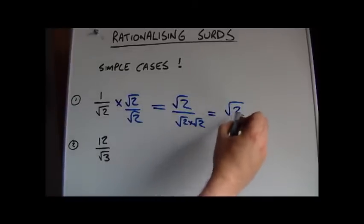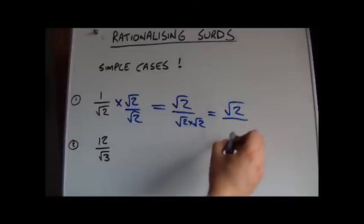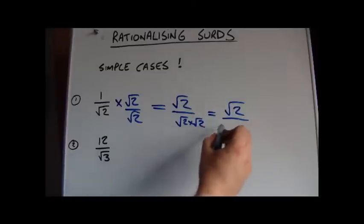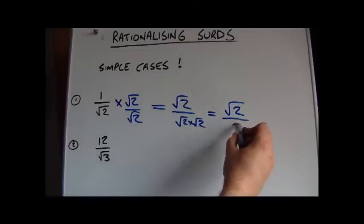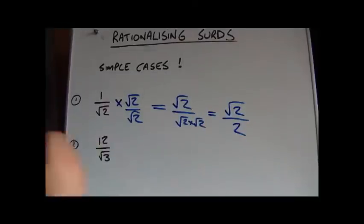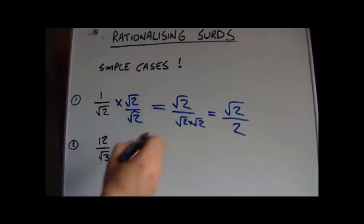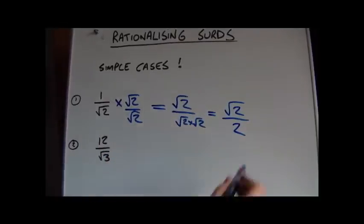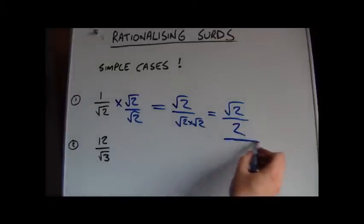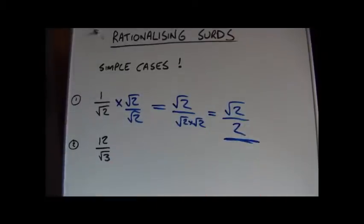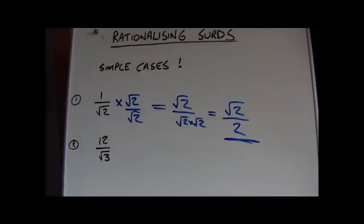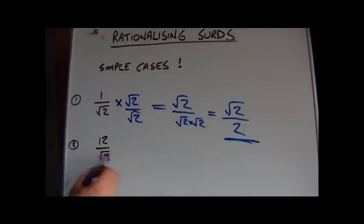We can simplify root 2 times root 2 — it's root 4, which equals 2 — so the result is root 2 divided by 2. This is a surd which has been rationalized: it now has a rational number on the bottom.